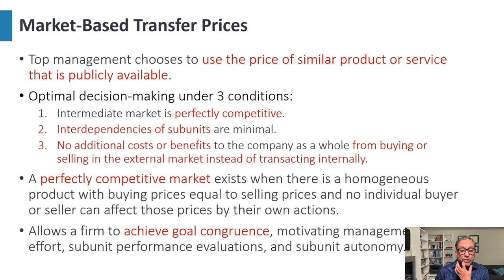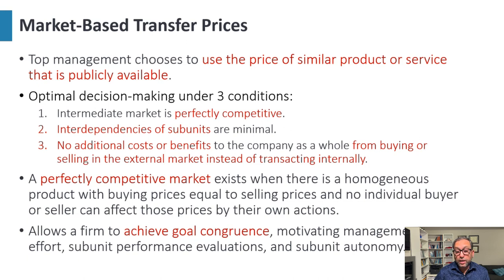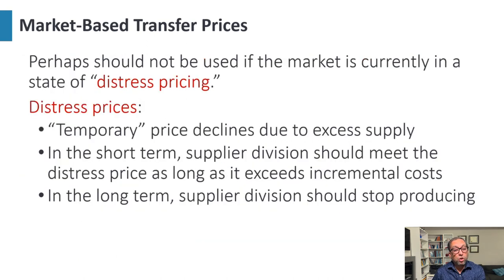For optimal decision making under market-based transfer pricing, three conditions apply: the intermediate market is perfectly competitive, interdependencies of subunits are minimal, and there is no additional cost or benefit to the company from buying or selling in the external market instead of transacting internally. A perfectly competitive market is one where the product is homogeneous, buying price equals selling price, and no individual buyer or seller can affect the price by their own actions. This allows a firm to achieve goal congruence, motivate management effort, and evaluate subunit performance. However, market-based pricing should perhaps not be used if the market is currently in a state of distress pricing.